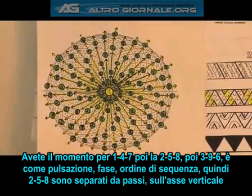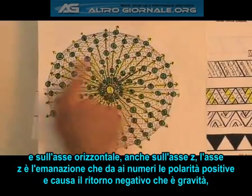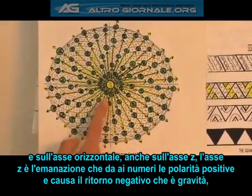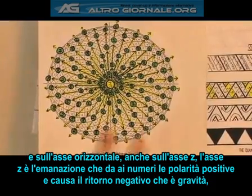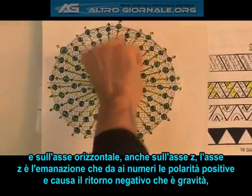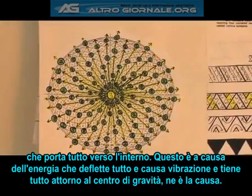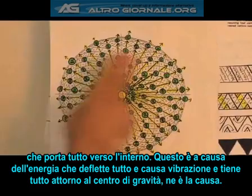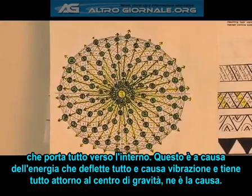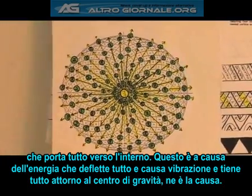2, 5, and 8 are all separated by thirds — separated by thirds on their vertical axis, separated by thirds on their horizontal axis, separated by thirds on the z-axis. The z-axis is this emanation coming out, giving the number its positive polarity sign symbol, and causing a negative backdraft coming back this way, which is gravity, entraining everything inwards. That's why you always have a center of gravity.